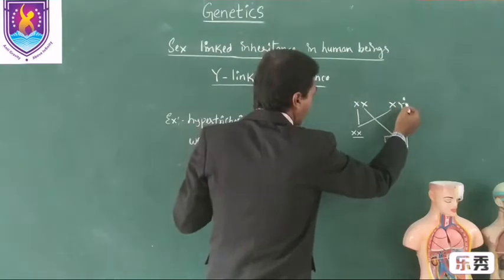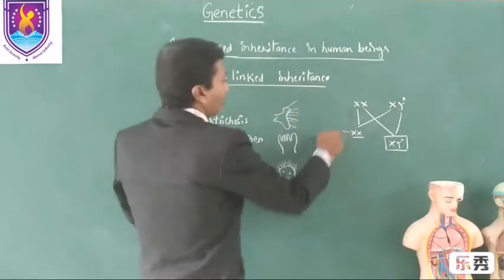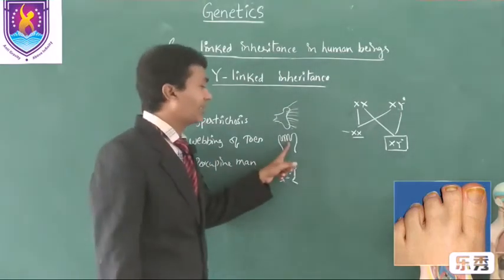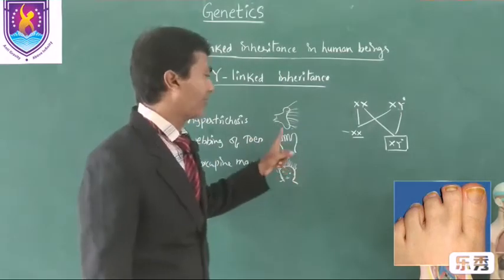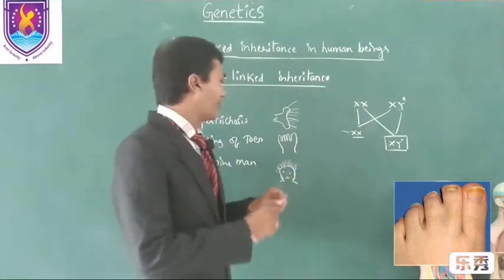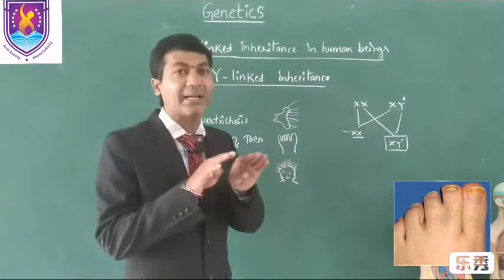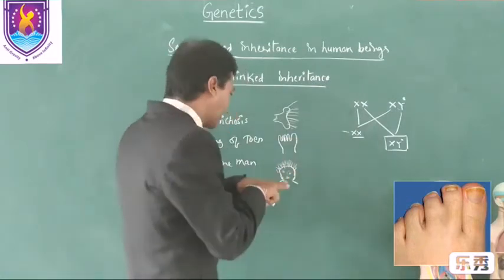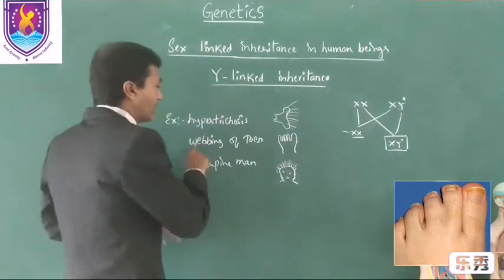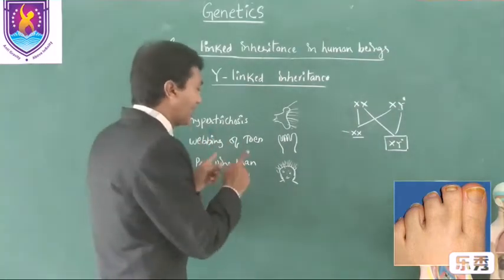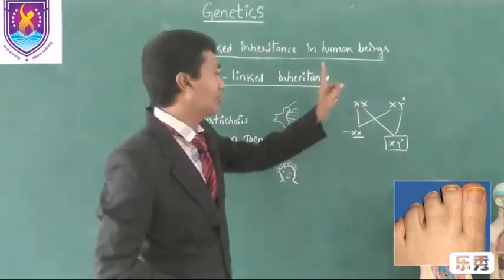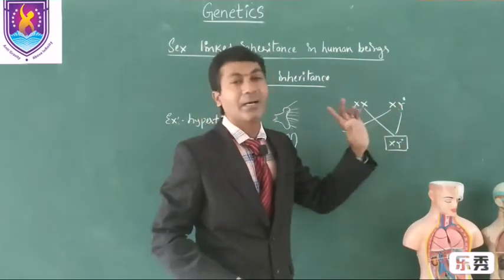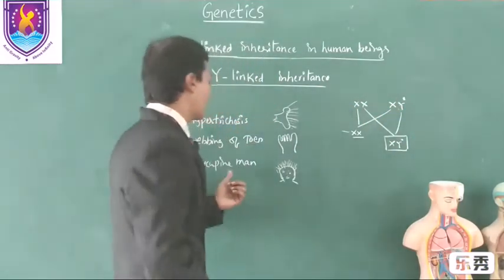Obviously, if the father has this problem, the son will also get it, and no daughter will get it. Another Y-linked condition is webbing of toes, where the fingers of the leg are fused and not separated — they have a web-like appearance. This condition is called webbing of toes, and it also occurs due to a defect in the Y chromosome, passing from father to son.